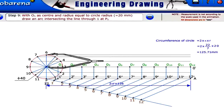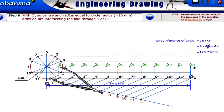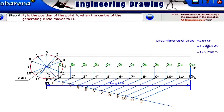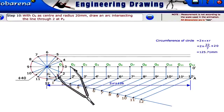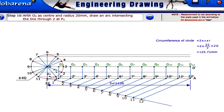With O1 as center and radius equal to the circle radius 20 mm, draw an arc intersecting the lines through 1 at P1. P1 is the position of the point P when the center of the generating circle moves to O1. With O2 as center and radius 20 mm, draw an arc intersecting the lines through 2 at P2.